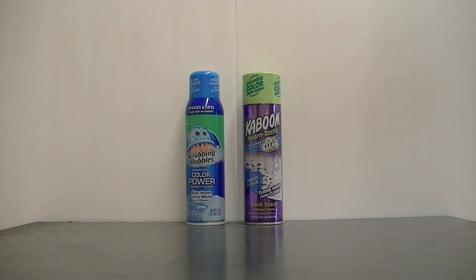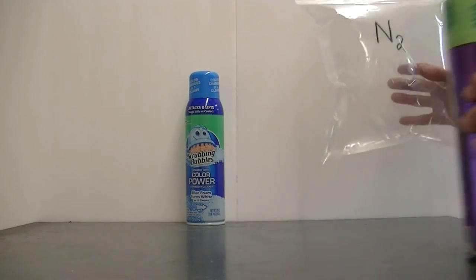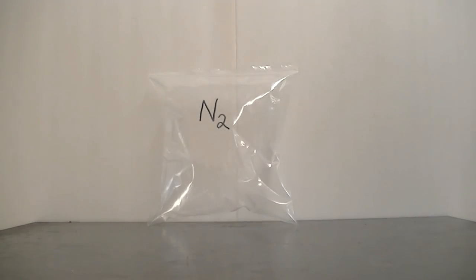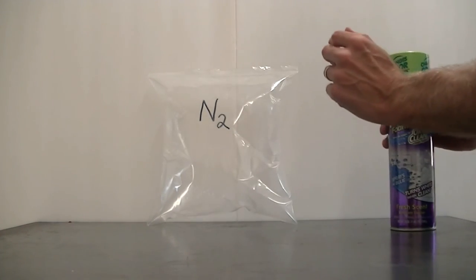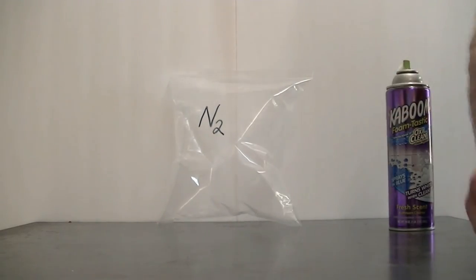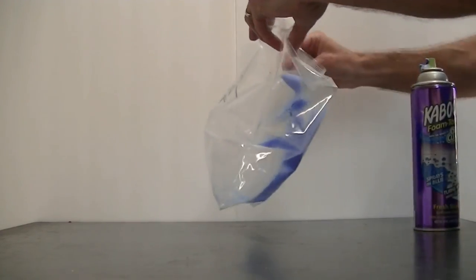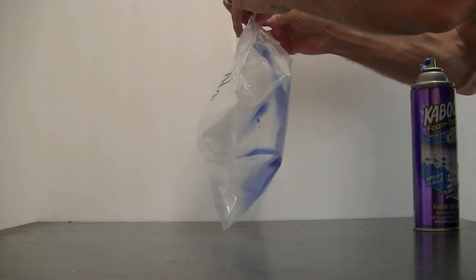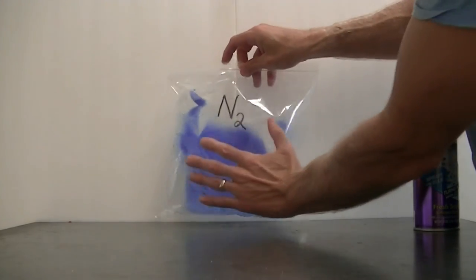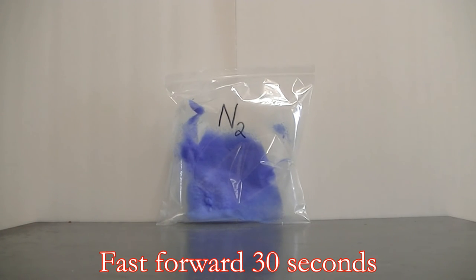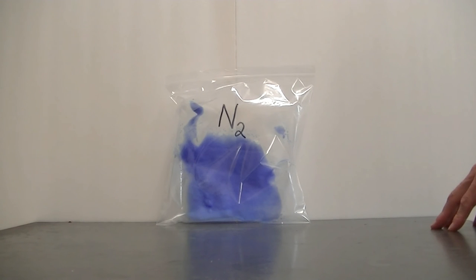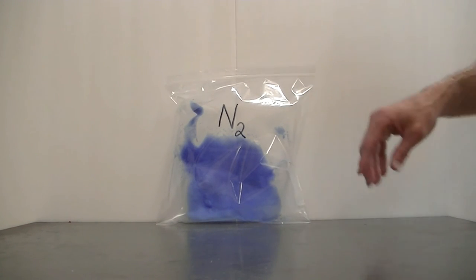It's pretty clear there's something in the air that causes this color change from blue to white. What might it be? Well, the main component of air is nitrogen gas. 78% of the air is nitrogen gas. And what I have here is a bag that's filled with nitrogen gas. So I'm going to squirt some of this cleaner into this atmosphere of nitrogen and see what happens. Spray it in. Seal it up. And let's watch. It doesn't look like there's much color change going on. So I'm guessing that nitrogen is not responsible for the blue to white color change.